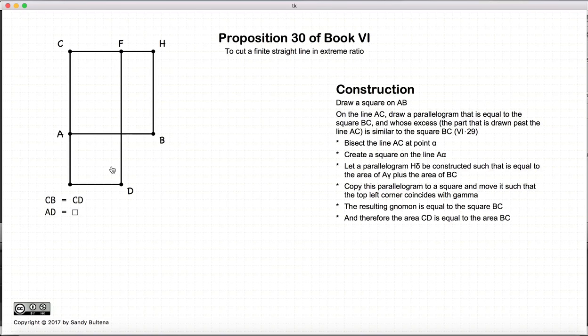Getting back to Proposition 30, now that we have drawn CD, let's look at what we have. We have CB is equal to AD, and AD is a square. Let's define the point E of the intersection of FD and AB, and E is the extreme ratio such that AB to AE is equal to AE to EB.